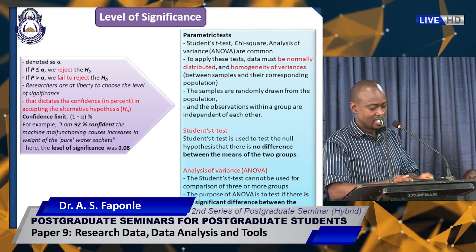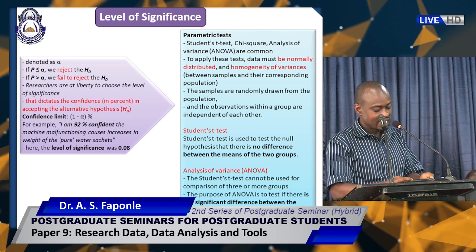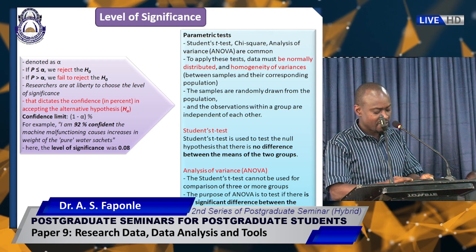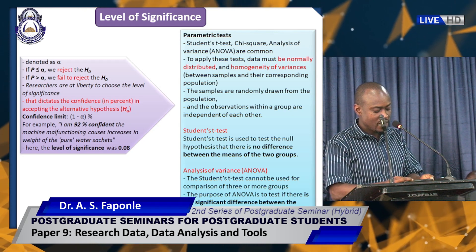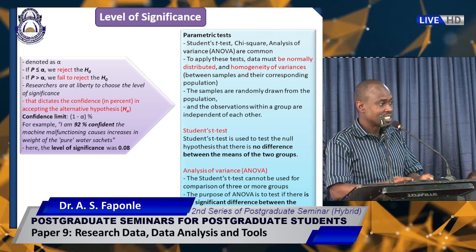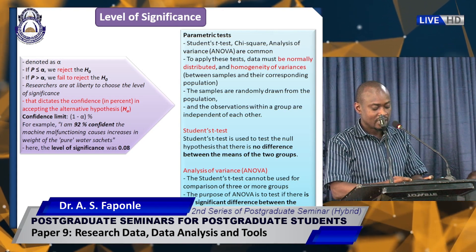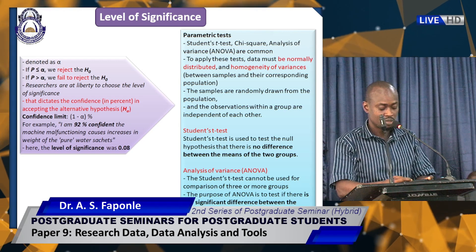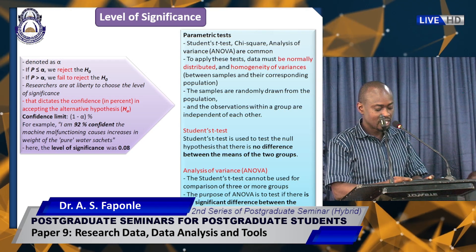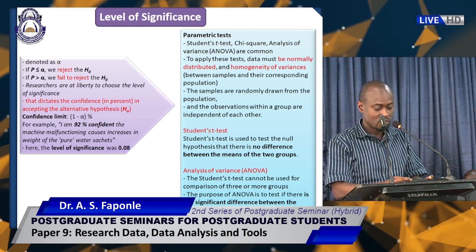An example statement describes how confident the researcher is about the outcome of the analysis: 'I am 92 percent confident the machine malfunctioning causes increases in weight of the pure water sachet.' Here, the level of significance was 0.08. There are parametric tests we can carry out in our analysis: student t-test, chi-square, and analysis of variance — these are the common ones.